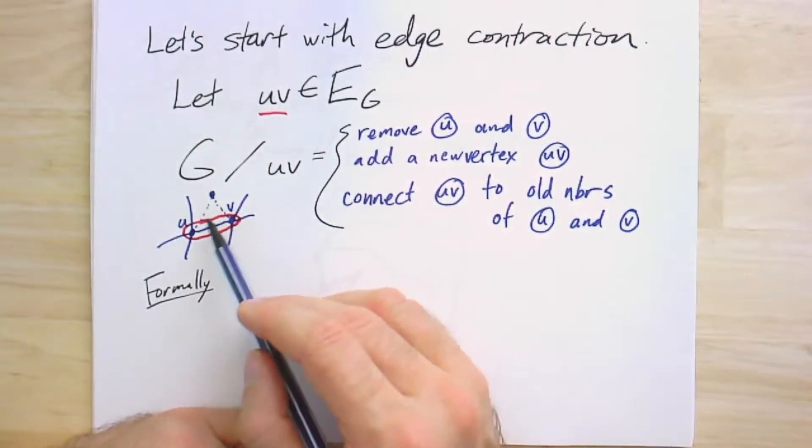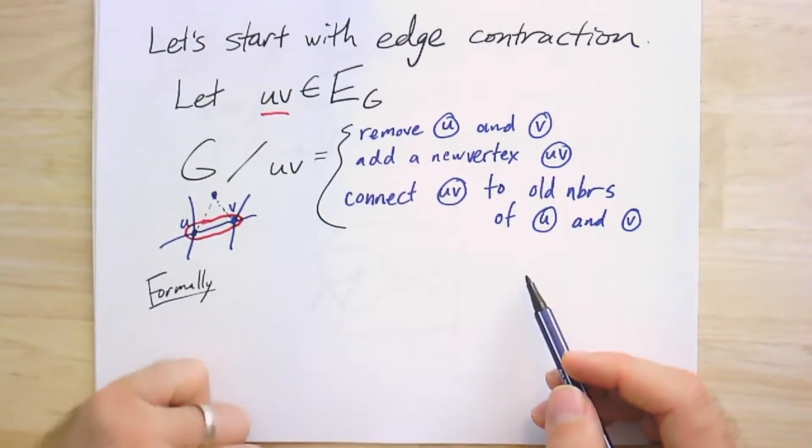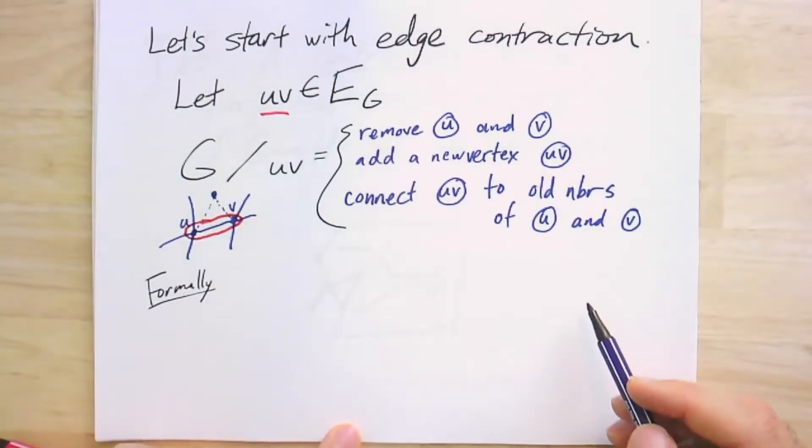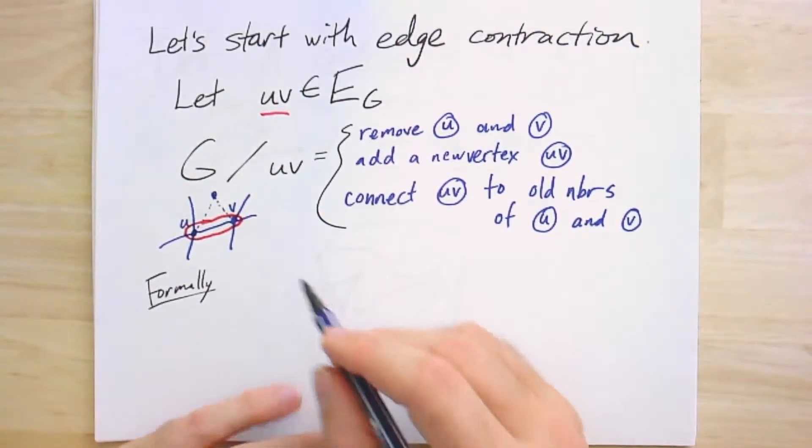So pairs of edges can be identified in the course of doing this edge contraction, not just this pair of vertices. If I try to write this formally, I might do something like the following.